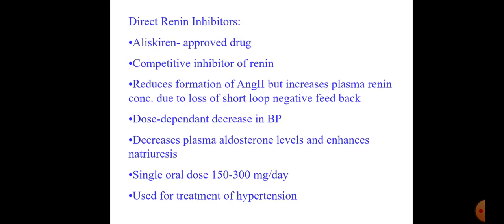The direct renin inhibitor is aliskiren. It is not commonly used because it offers no additional advantage over ACE inhibitors or ARBs, and is more costly. Importantly, only one RAS blocker should be used in a single patient — we cannot combine an ACE inhibitor with an ARB, or an ARB with a renin inhibitor, because using two RAS blockers simultaneously carries greater risk of hyperkalemia. Aliskiren is also used for treatment of hypertension.